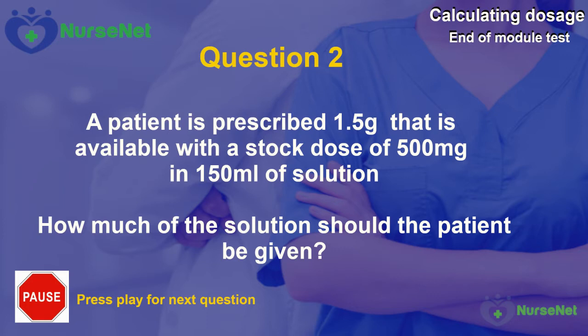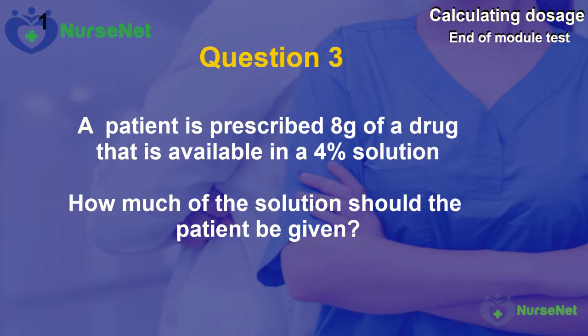Question 3. A patient is prescribed 8g of a drug that is available in a 4% solution. How much of the solution should the patient be given?